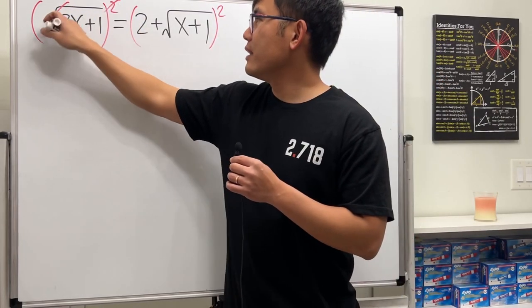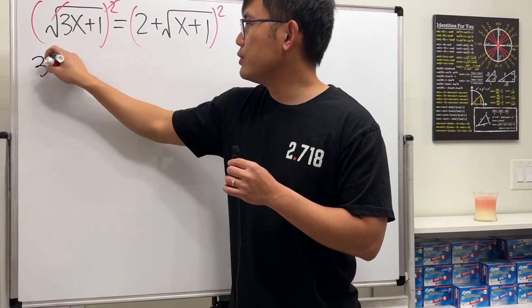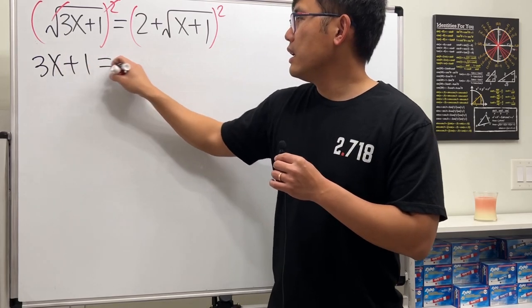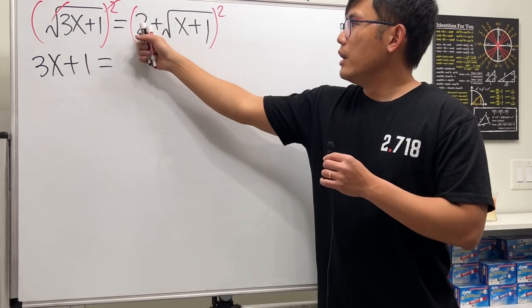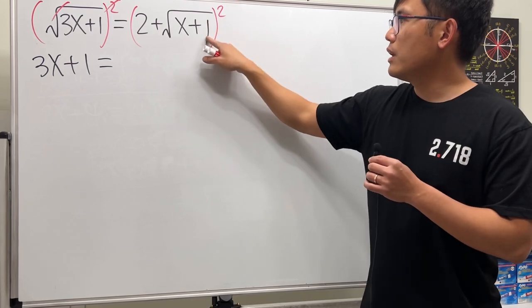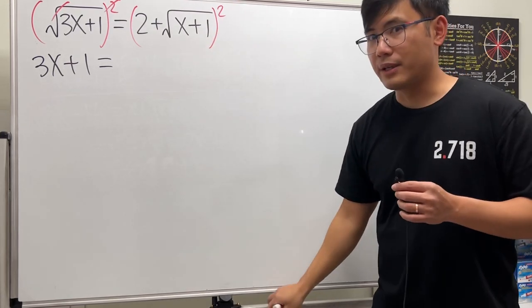This way, we see that this and that cancel right away, and we just get inside, which is 3x plus 1. And then on the right-hand side, 2 plus square root of x plus 1 squared. Make sure that we multiply it out correctly.